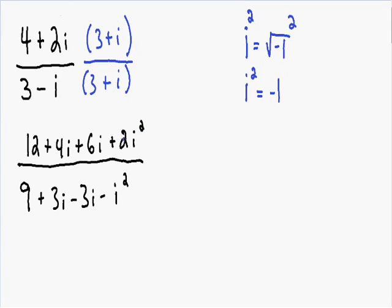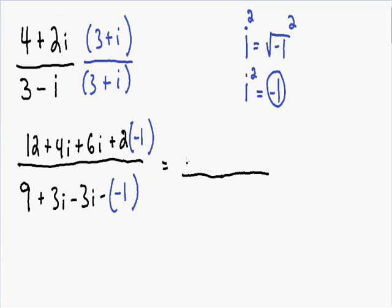Just like in the last problem, we want to replace every i squared term with a negative 1, because we know that i squared is equal to negative 1. So I'm going to erase both i squared terms and replace them with negative 1. Now let's simplify as much as possible, starting with the numerator. On the left we have positive 12. In the middle we have two like terms: 4i and 6i, so 4 plus 6 equals 10, giving us positive 10i. On the right, positive 2 times negative 1 equals negative 2. In the denominator, we have 9 on the left. Our positive 3i and negative 3i cancel each other out. And on the right, negative times negative 1 equals positive 1.